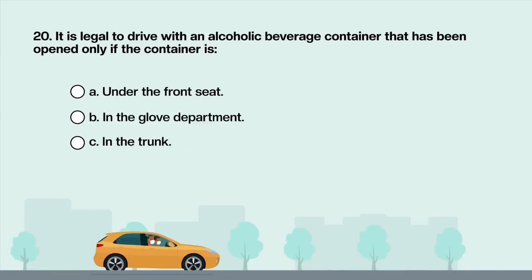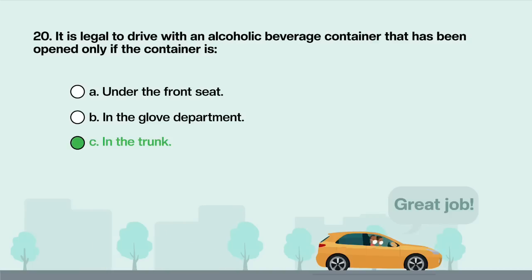It is legal to drive with an alcoholic beverage container that has been opened only if the container is: A. Under the front seat. B. In the glove compartment. C. In the trunk. Answer is C: In the trunk.